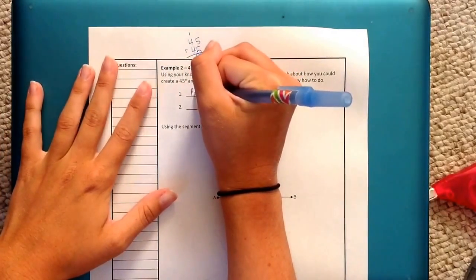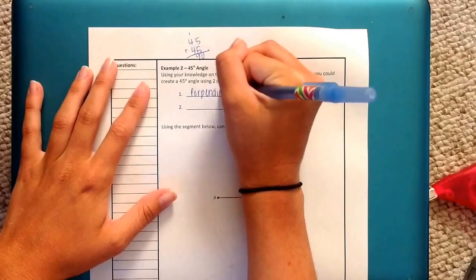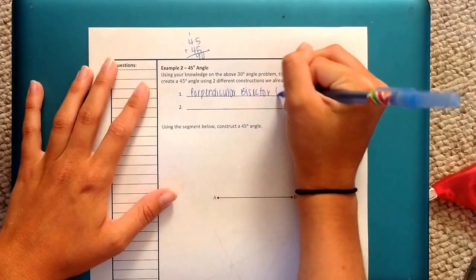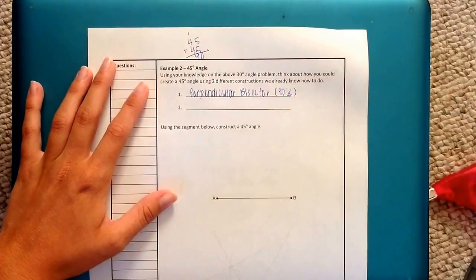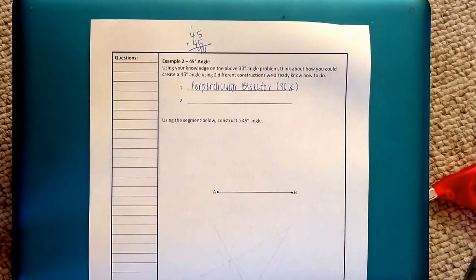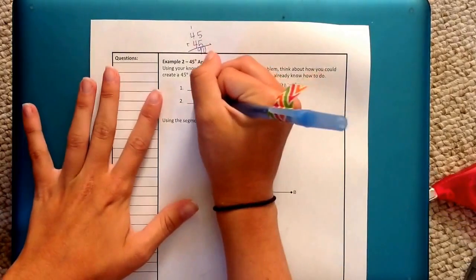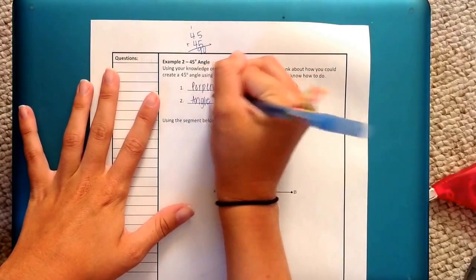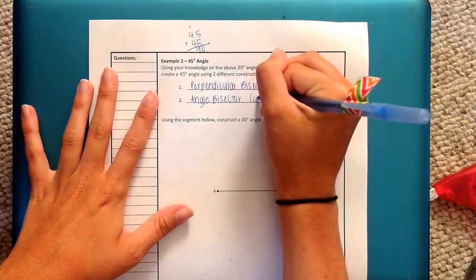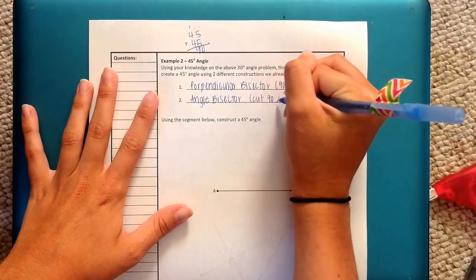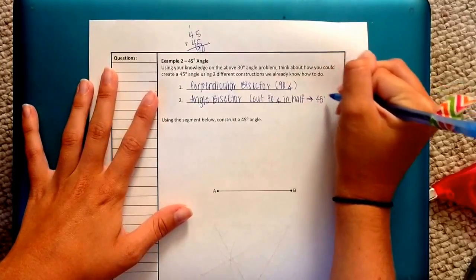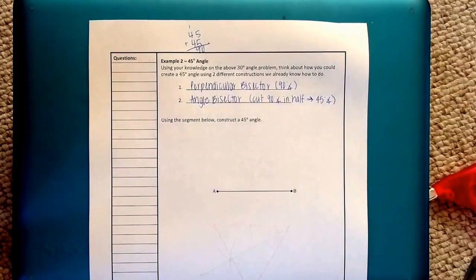Therefore, we're going to do a perpendicular bisector. And in parenthesis, I'm just going to write 90 degree angle. Because that's what it's going to give us after all. Once we have a 90 degree angle, we need to go from 90 to 45 degrees. And just as we did on the last one, we're going to use that angle bisector construction again. It will cut 90 degree angle in half. Then we have 45 degree angle.